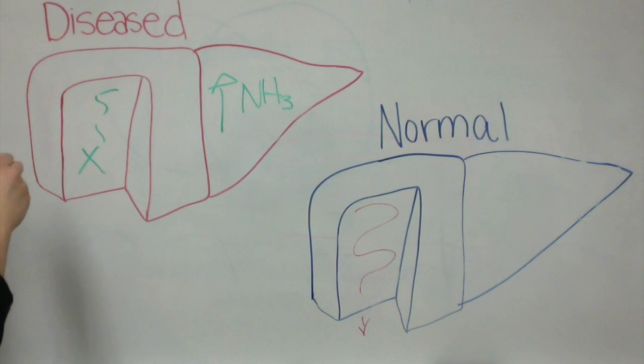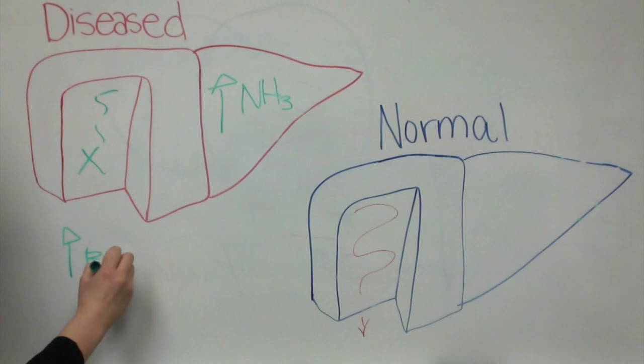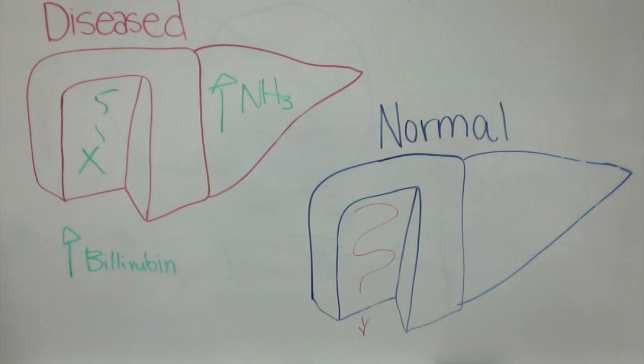Jaundice forms when there is too much bilirubin in your system. Bilirubin is a yellow pigment that is formed by the breakdown of dead red blood cells in the liver. Normally, the liver gets rid of bilirubin along with old red blood cells, but since the liver cannot process blood with hepatitis C, that is what causes the yellowing of the skin and the eyes.